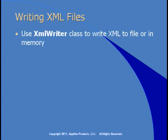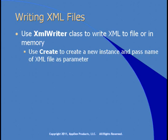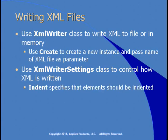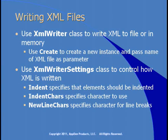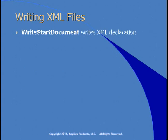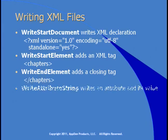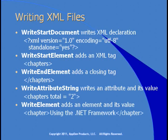To write XML files, we can use the XmlWriter class, which can write XML to a file or in memory. You use the Create method of the XmlWriter class to create a new instance, and you pass to it the name of the XML file you want to create. You can use XmlWriterSettings to control how XML is written — you can specify that elements should be indented, specify what character to use to indent, and also specify what character to use for line breaks. To write the actual XML, you'll typically use WriteStartDocument to write the XML declaration, WriteStartElement to add an opening tag, WriteEndElement to write a closing tag, WriteAttributeString to write an attribute and its value, and WriteElement to add an element and its value all at the same time.